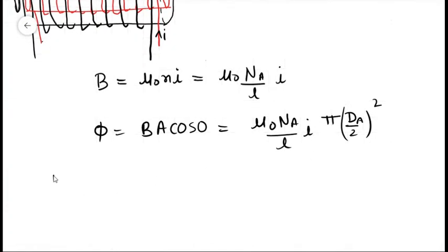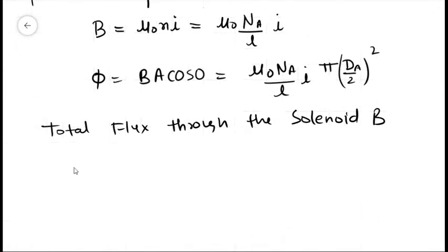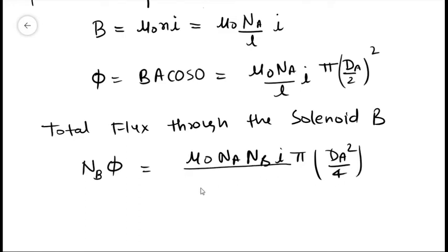So total flux through the solenoid B will be equal to N into Φ, where N is the number of turns in loop B, and that will be equal to μ₀NANBI π DA² by 4 divided by L.